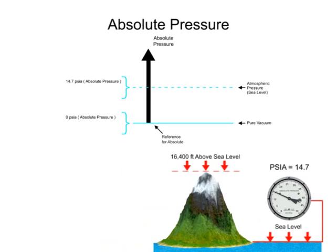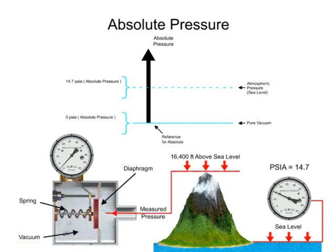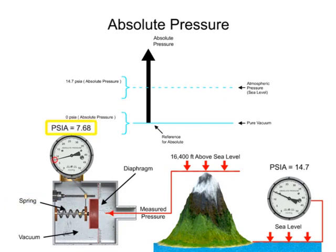A common method to measure absolute pressure is a mechanical diaphragm gauge. The diaphragm is a flexible membrane that flexes when exposed to pressure. On the opposing side of the diaphragm is the reference pressure, which is vacuum for absolute pressure. As the diaphragm element bends towards the side with the lowest pressure, it pushes on a spring that is mechanically linked to the gauge pointer and indicates the pressure value.